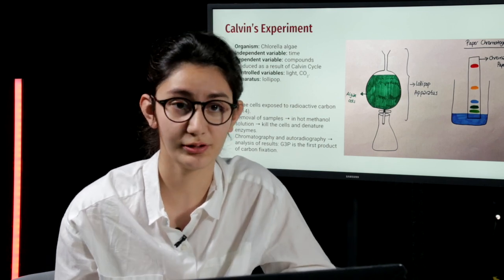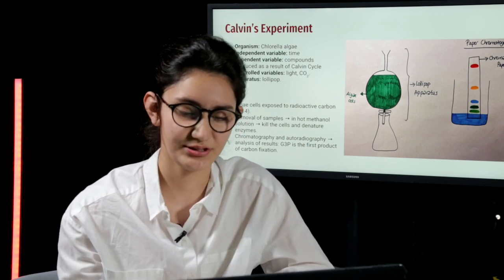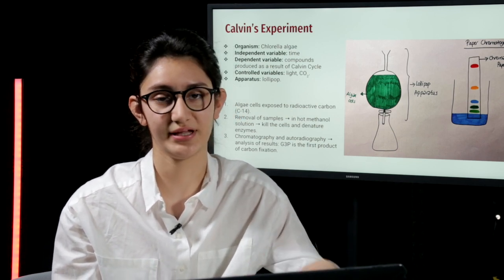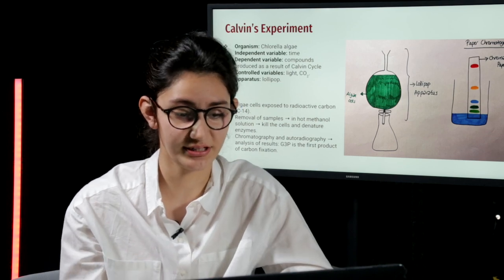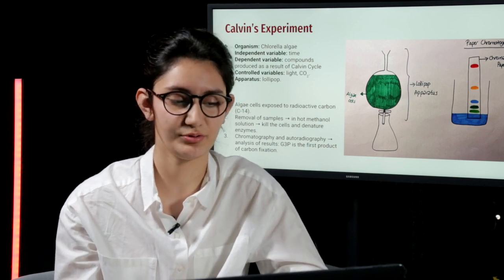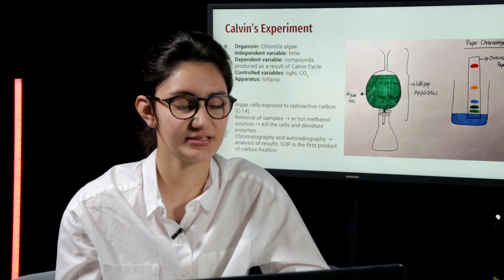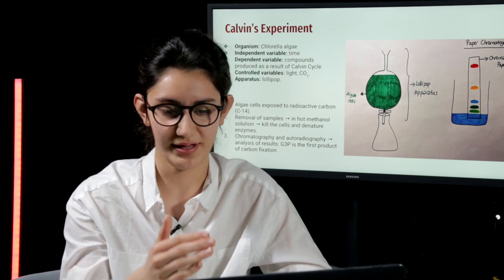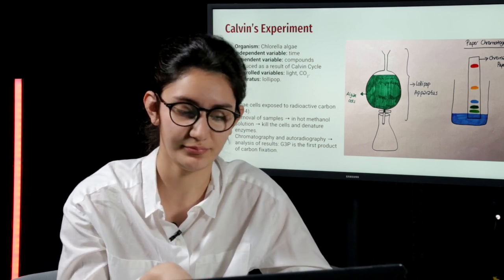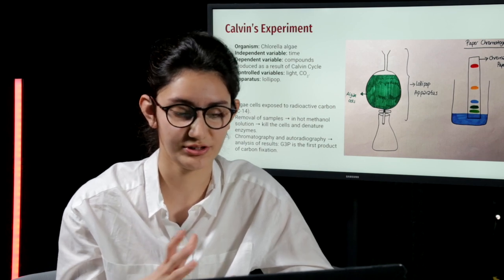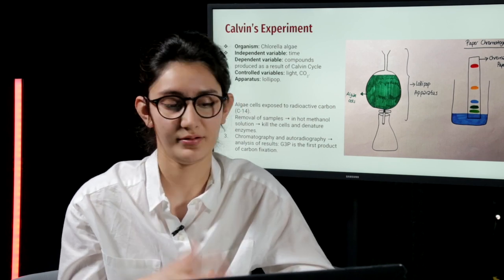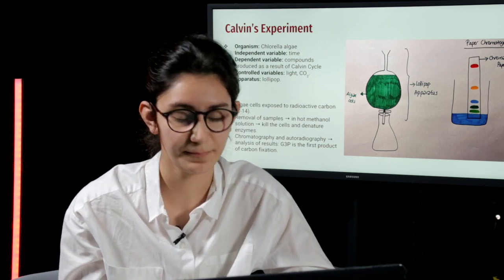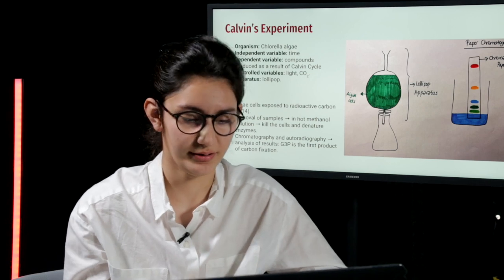An apparatus called lollipop was used in that experiment. As you can see in the left-hand side, that lollipop apparatus contains the algae cells. These algae cells are given a radioactive carbon, which is C14. Every five seconds, some of the samples, some of the algae cells were removed from that lollipop apparatus and they were dropped into an Erlenmeyer flask where there was a solution of hot methanol. This solution was used to kill the cells and also denature the enzymes.